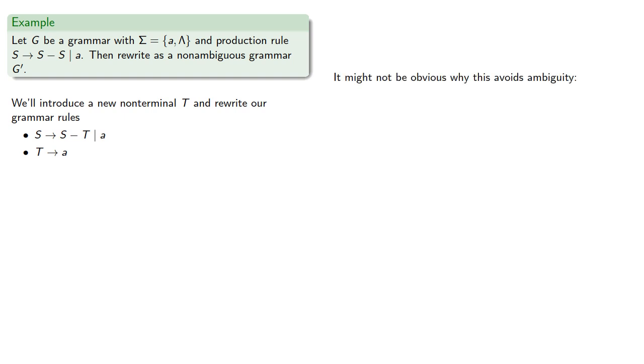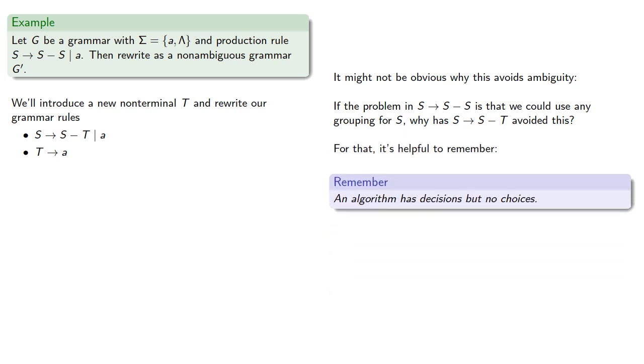It might not be obvious why this avoids ambiguity. If the problem in S produces S minus S is that we could use any grouping for S, why has S produces S minus T avoided this? For that, it's helpful to remember, an algorithm has decisions but no choices.